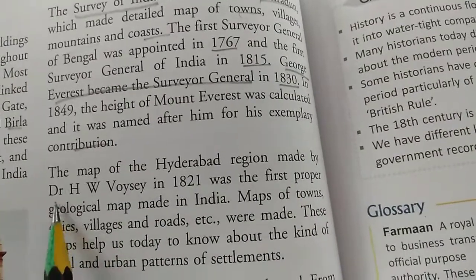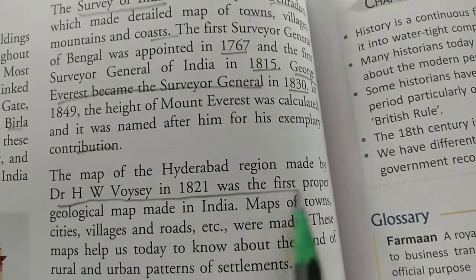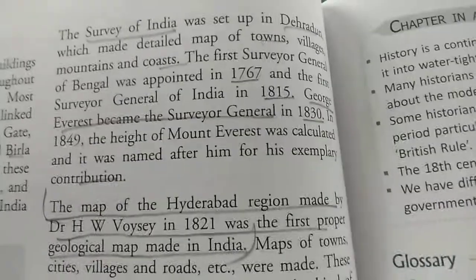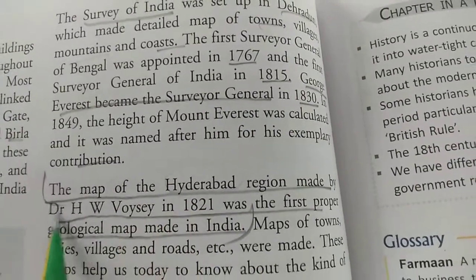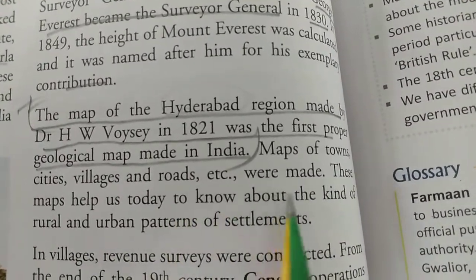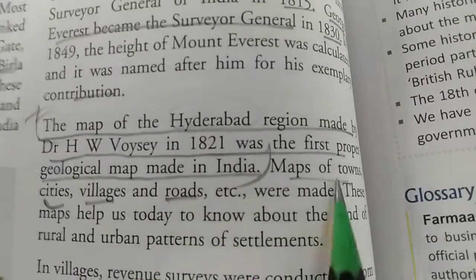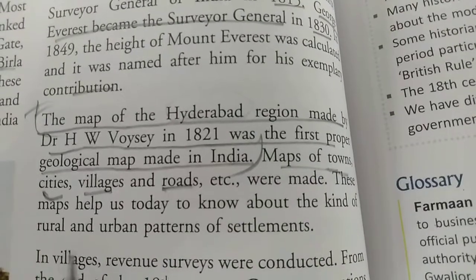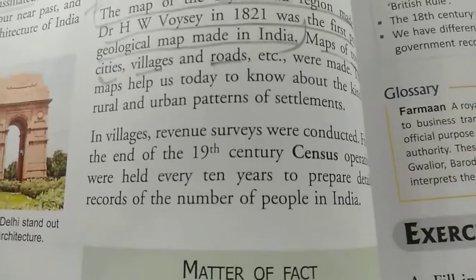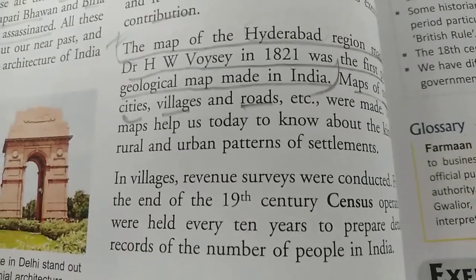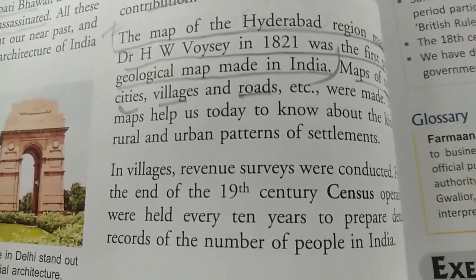The map of the Hyderabad region made by Dr. H.W. Weuse in 1829 was the first proper geographical map made in India. Maps of towns, cities, villages, and roads were made, helping us today understand the rural and urban patterns of settlement — how cities were divided, how houses were made, and how the whole city was organized during the British period.